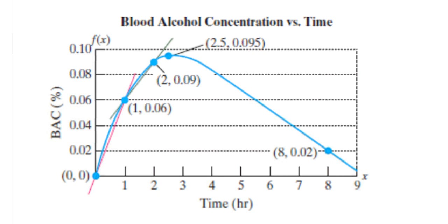The average rate of change in a BAC between two points on the graph is the slope of the secant line through those points.